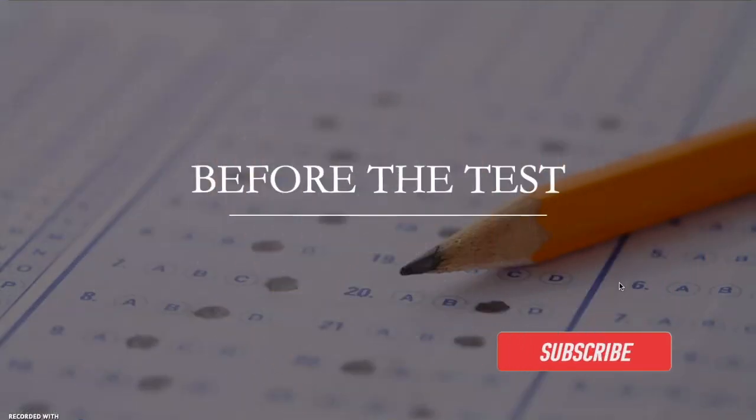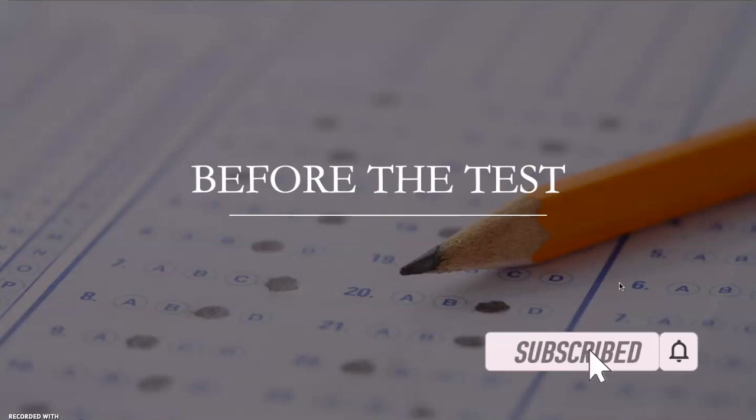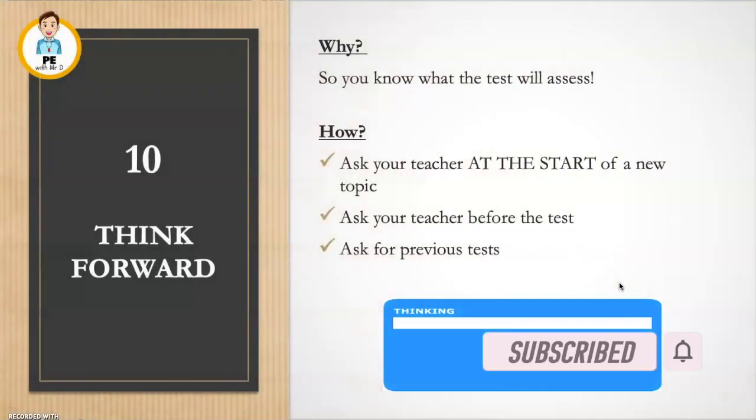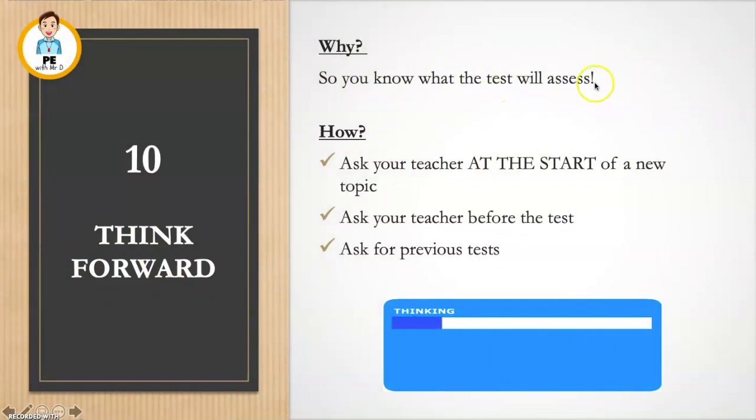Before the test there are a number of key things that we need to do. Tip number 10: we need to think forward. Why? So you will know exactly what the test will assess when you get to it. How? Very simple - ask your teacher at the start of a new topic how you'll be assessed. Another great way of doing this is asking for previous tests or assessments to get an idea about what might be on there.